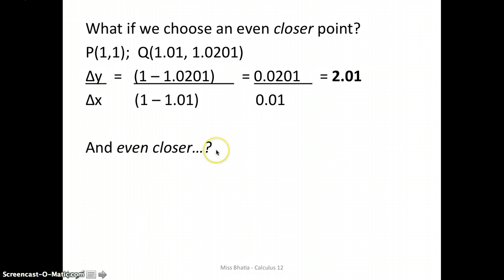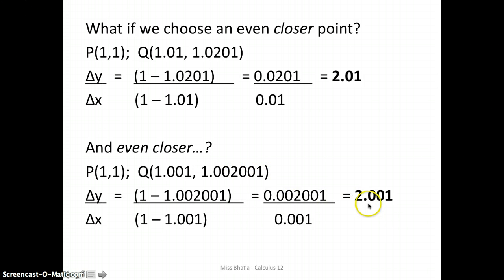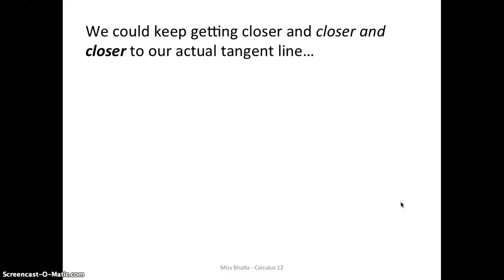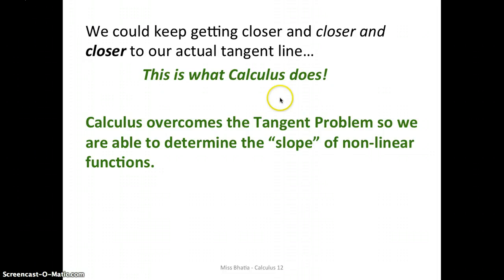What if we move even closer? If we move even closer, we have our point 1.001 and our y, 1.002001. This gives us a slope of 2.001, progressively closer and closer to 2. We could keep getting closer and closer and closer to our actual tangent line. This would take a lot of calculations. However, calculus does this. This is what calculus does for us. So calculus overcomes the tangent problem. So we're able to determine the slope of nonlinear functions. We'll get a little bit more into this.